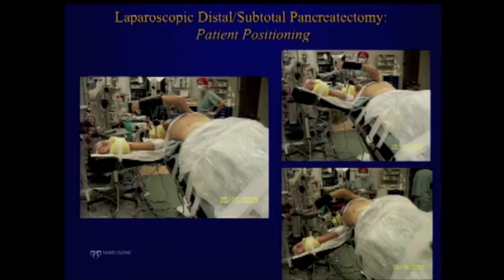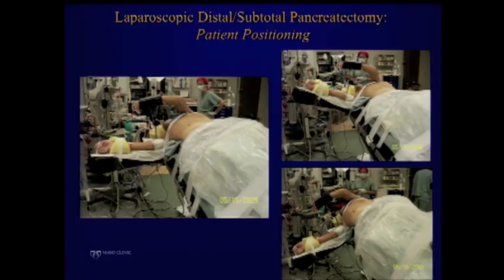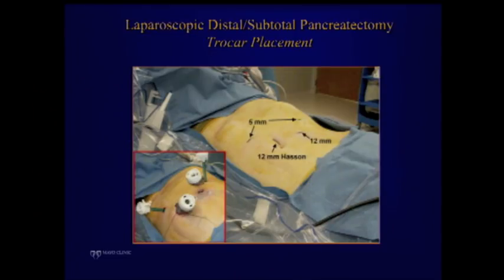Patient positioning: we like to put the patient in a modified right lateral decubitus. We really secure the patient to the operative table to make sure we can move the patient sideways. When you're doing the medial part of the operation you want the patient in one position, and when doing the spleen and tail you want the patient rotated the other way. These simple maneuvers help tremendously during surgery, particularly for subtotal pancreatectomy, where too much right lateral decubitus causes trouble accessing the superior mesenteric portal vein trunk.